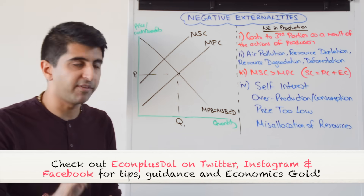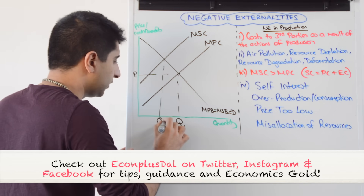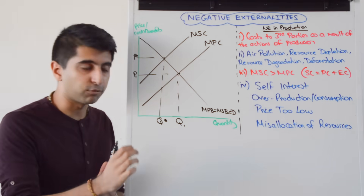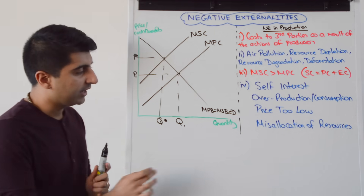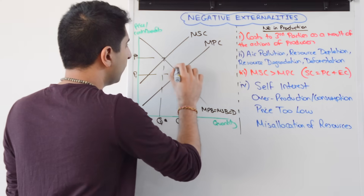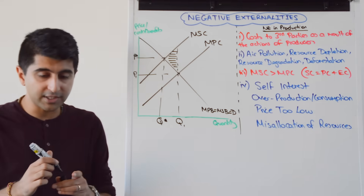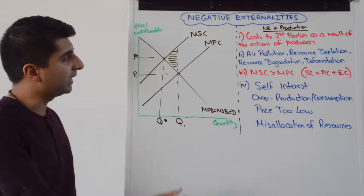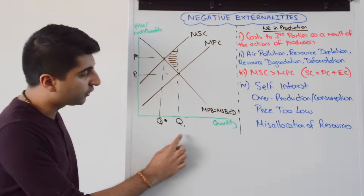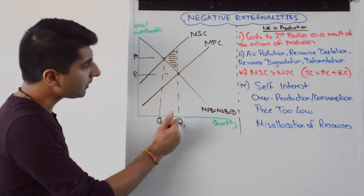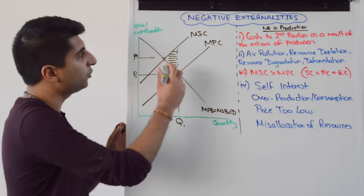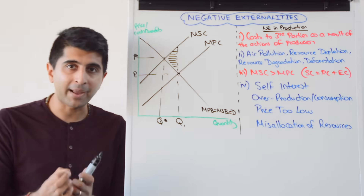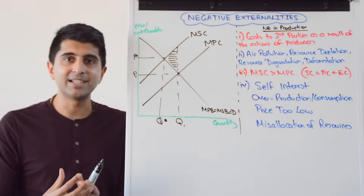But the social optimum — which is allocative efficiency — occurs where MSC equals MSB, giving us Q star and P star. Because there is a difference between social cost and private cost, the market is allocating resources at the wrong level — there's a misallocation of resources. There is an overproduction and overconsumption, and therefore a welfare loss. The welfare loss is this triangle here. A great trick: it's always the triangle that points towards the social optimum. The other way of working it out is to go to Q1 and compare social cost and social benefit — social cost is way up here, social benefit is down there. For all units produced beyond Q star, social cost is greater than social benefit, so we're not maximising net social benefit, and therefore allocative efficiency is not occurring.